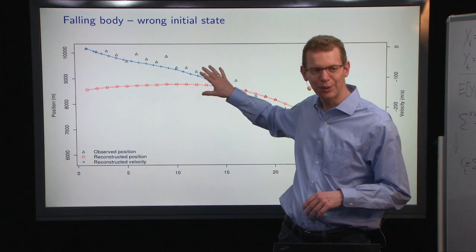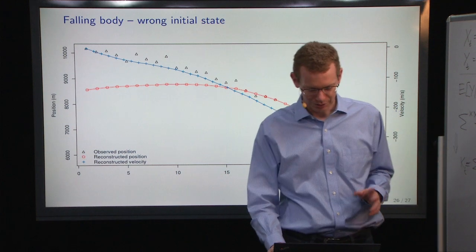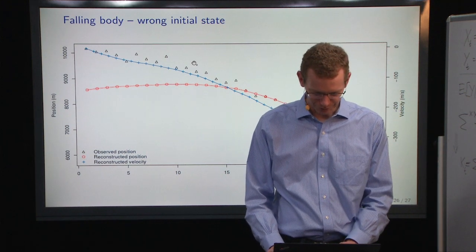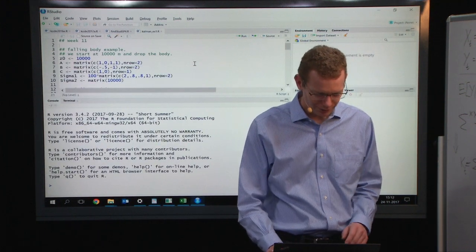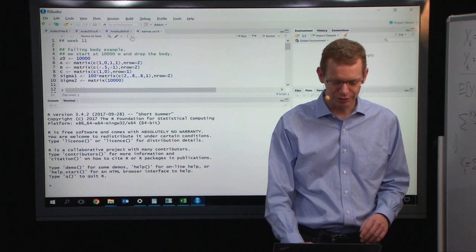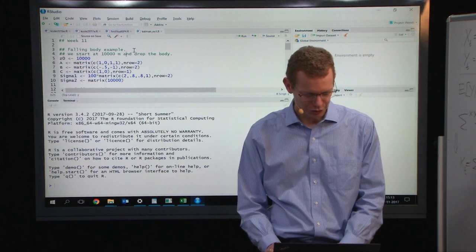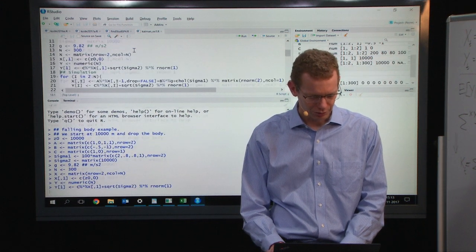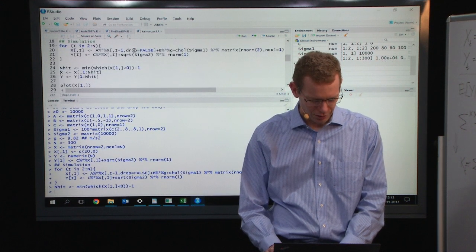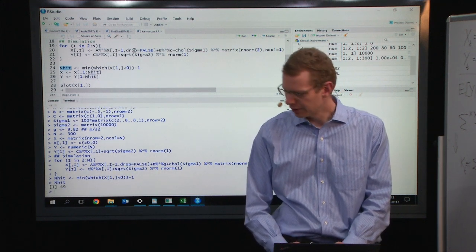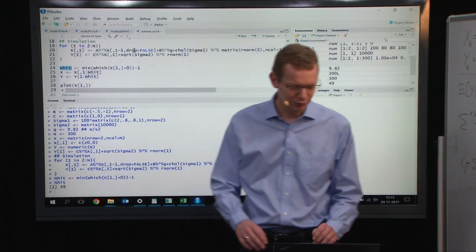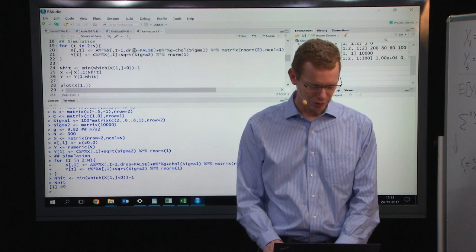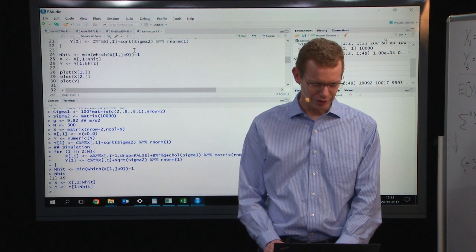Here I chose some very bad parameter values, but I'll show that in an example. Let's go to R and run the first bit here. That's doing a simulation just like before. In this case, it took 49 time steps before it hit the ground, so we will only keep the first 49.